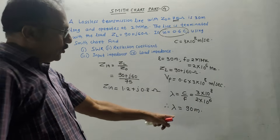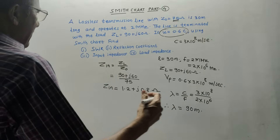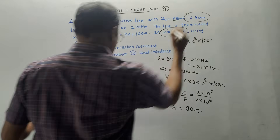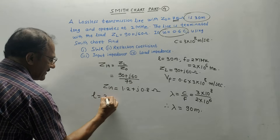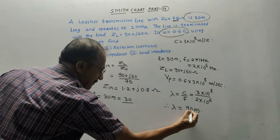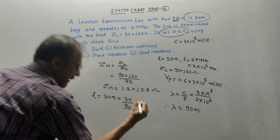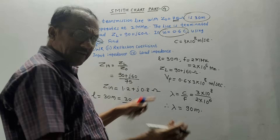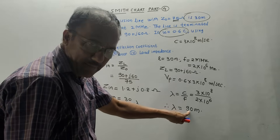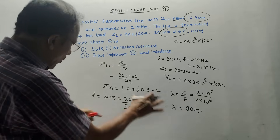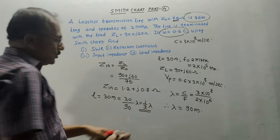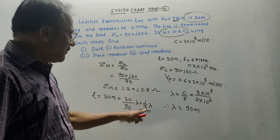We need to convert the given length in terms of wavelength. The given length is 30 meters. In terms of wavelength, it is 30 divided by lambda — that is 90 — multiplied by the notation lambda. As discussed earlier, divide the given length by the value of lambda and multiply by the notation lambda. In this case, the result is one-third lambda.